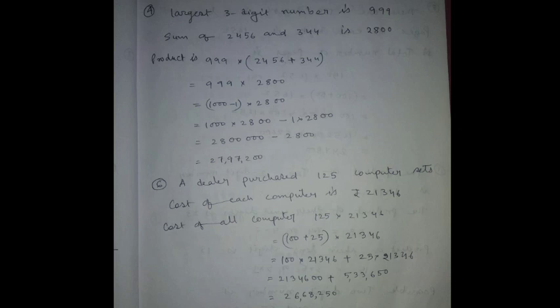Find the product of the largest 3-digit number and the sum of 2456 and 344. The answer is the largest 3-digit number is 999, and the sum of 2456 and 344 is 2800.